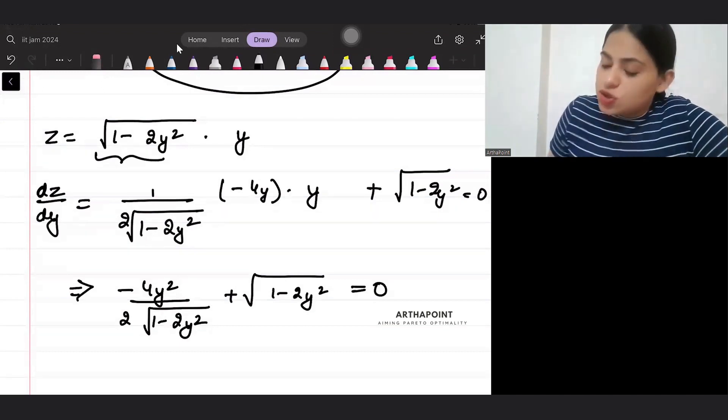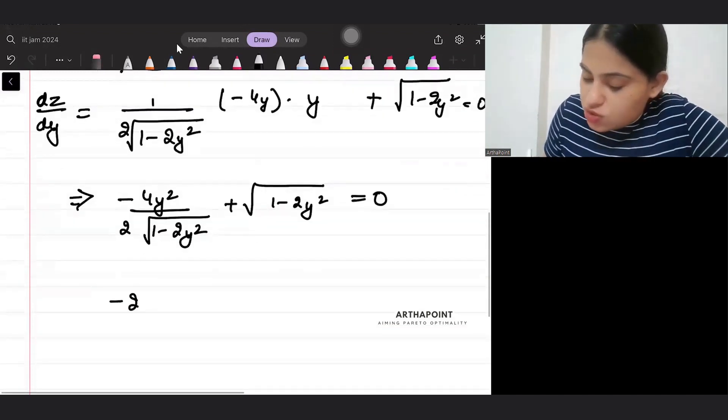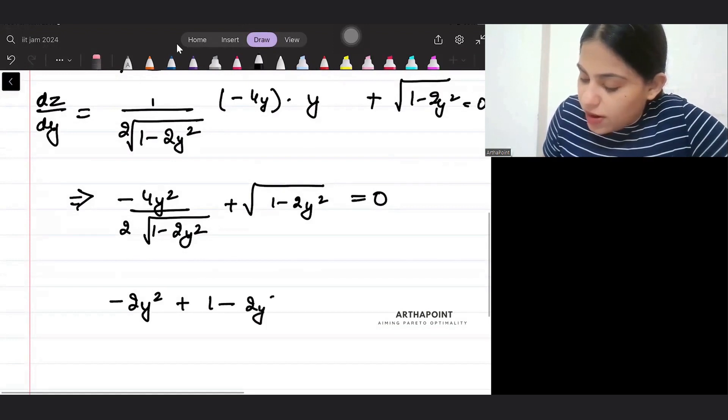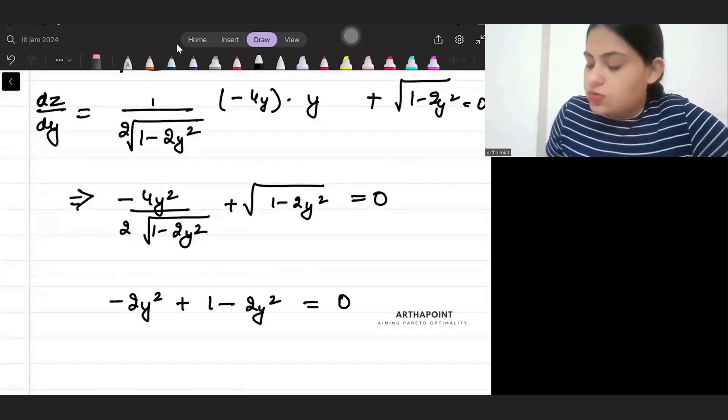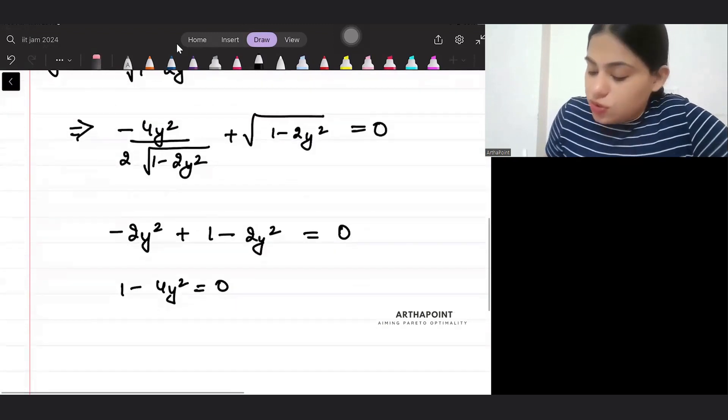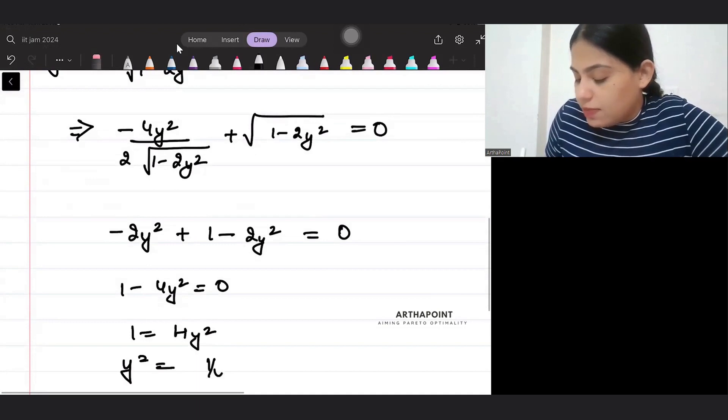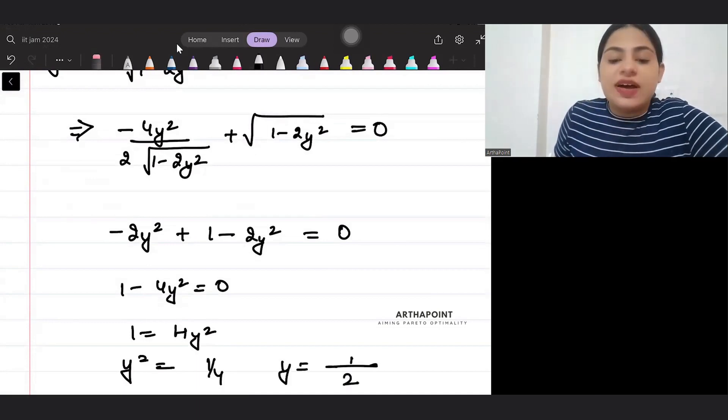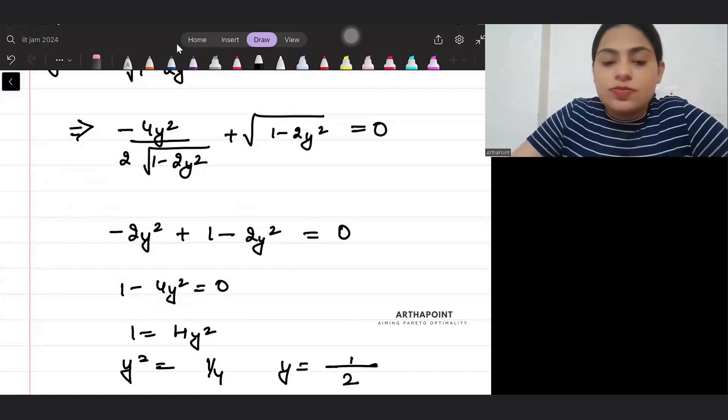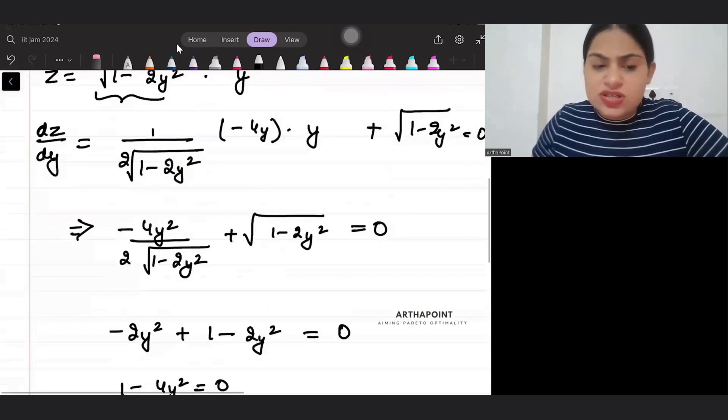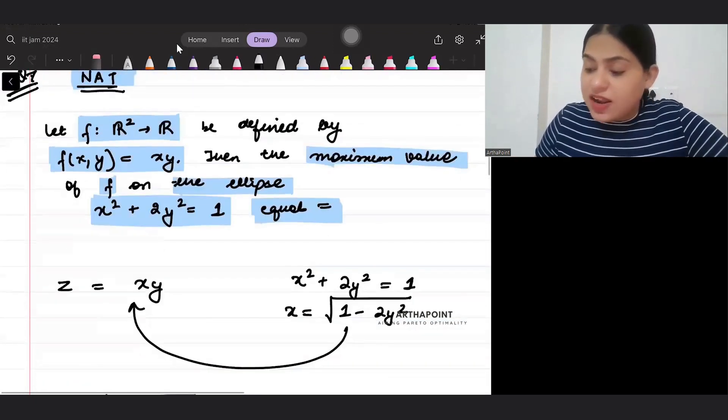So what will you get from here? Minus 2 y square plus 1 minus 2 y square is equal to 0, so 1 minus 4 y square is equal to 0. So 1 will be 4 y square, so y square will be 1 by 4, so y will be 1 by 2.